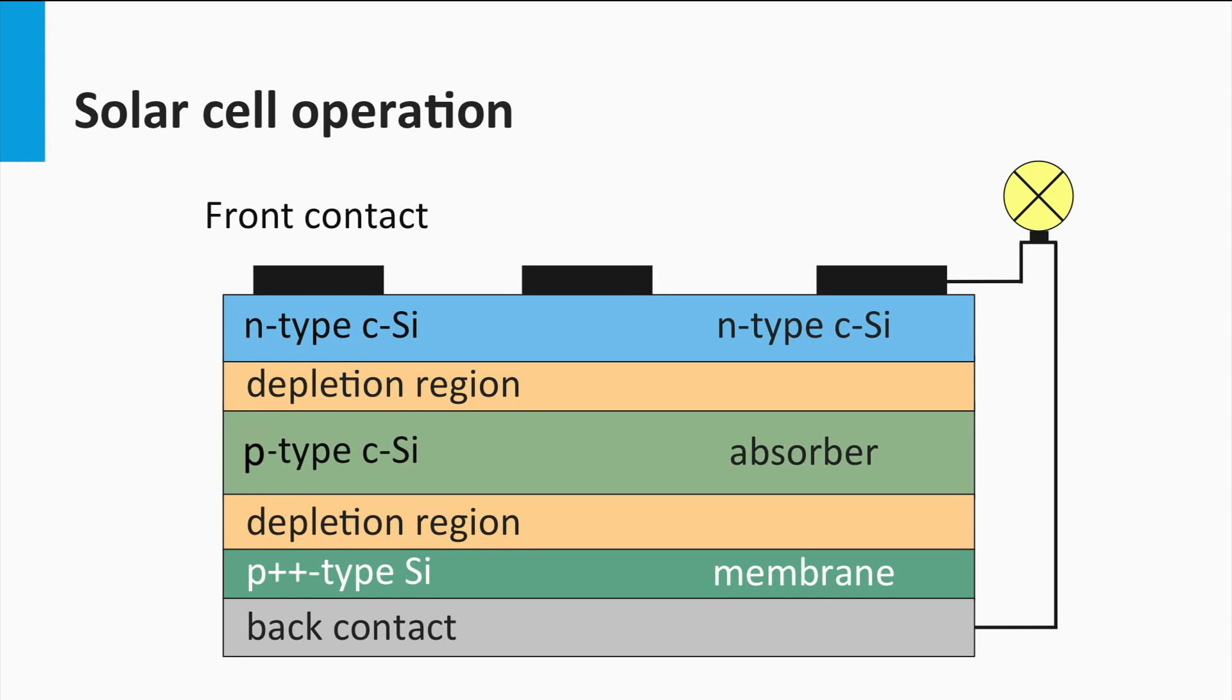It shows that the photovoltaic process is based on three important principles. The first is excitation of free mobile charge carriers due to light absorption. The second is separation of the charge carriers. And the third one is collection of the charge carriers at the contacts.